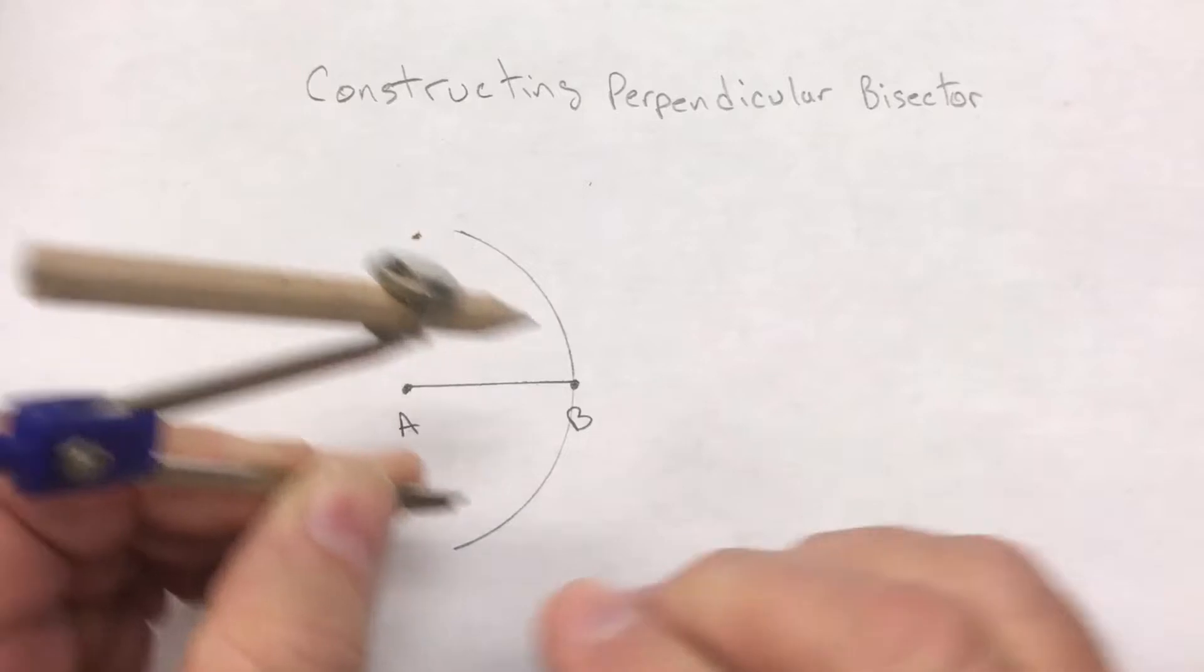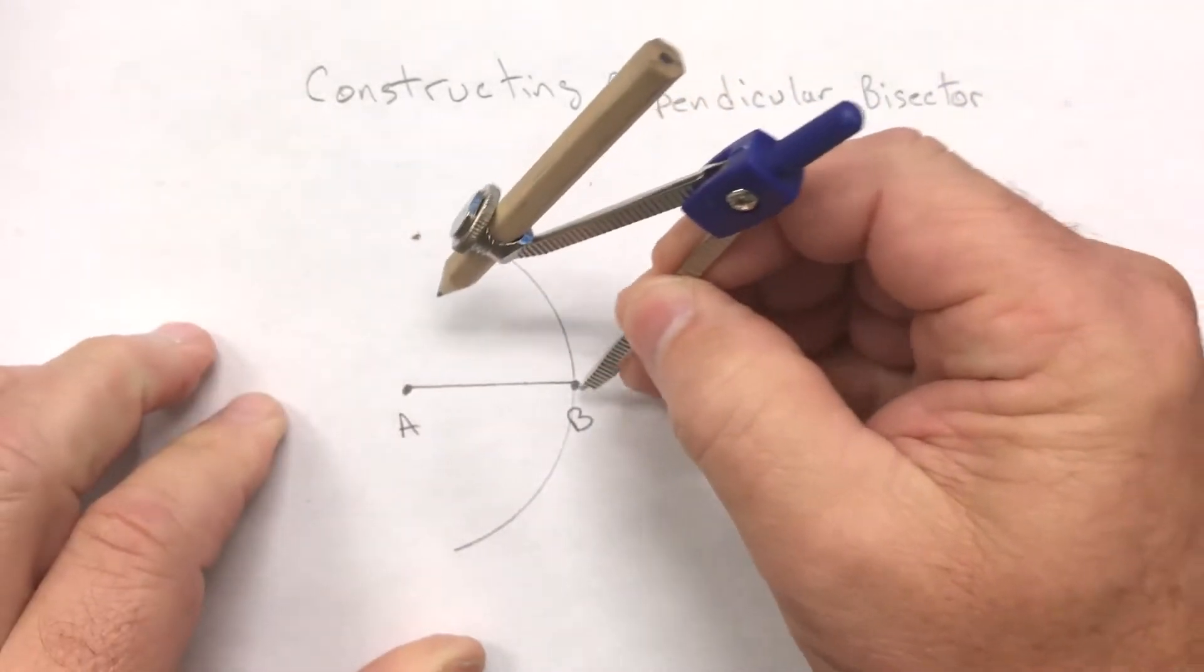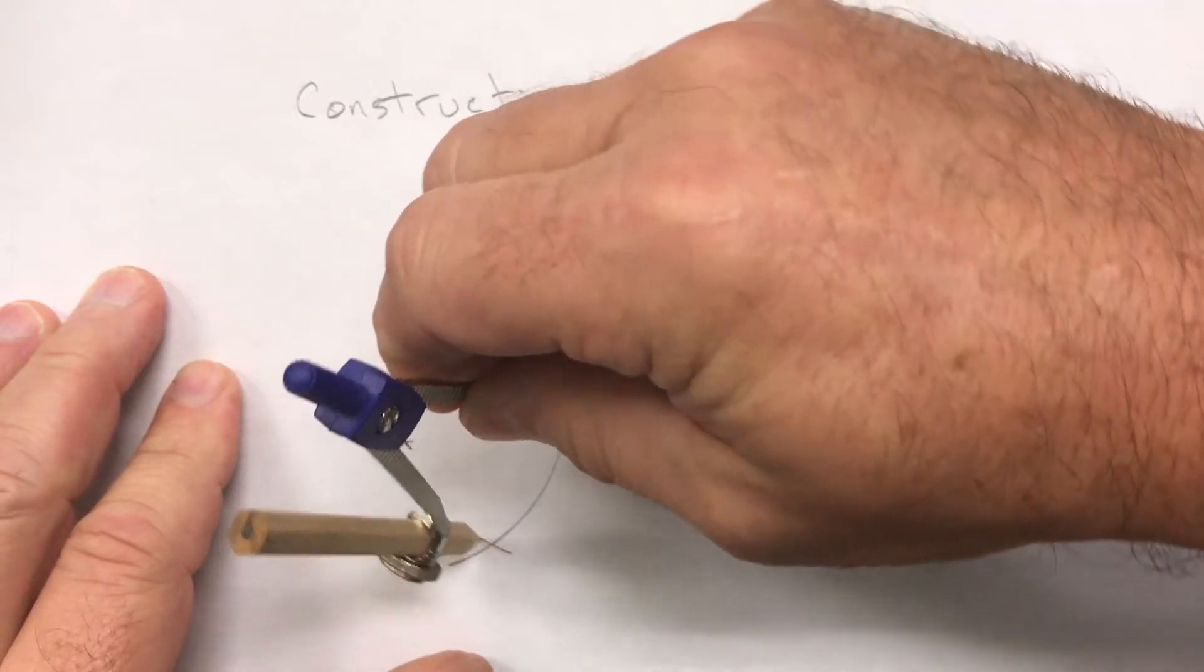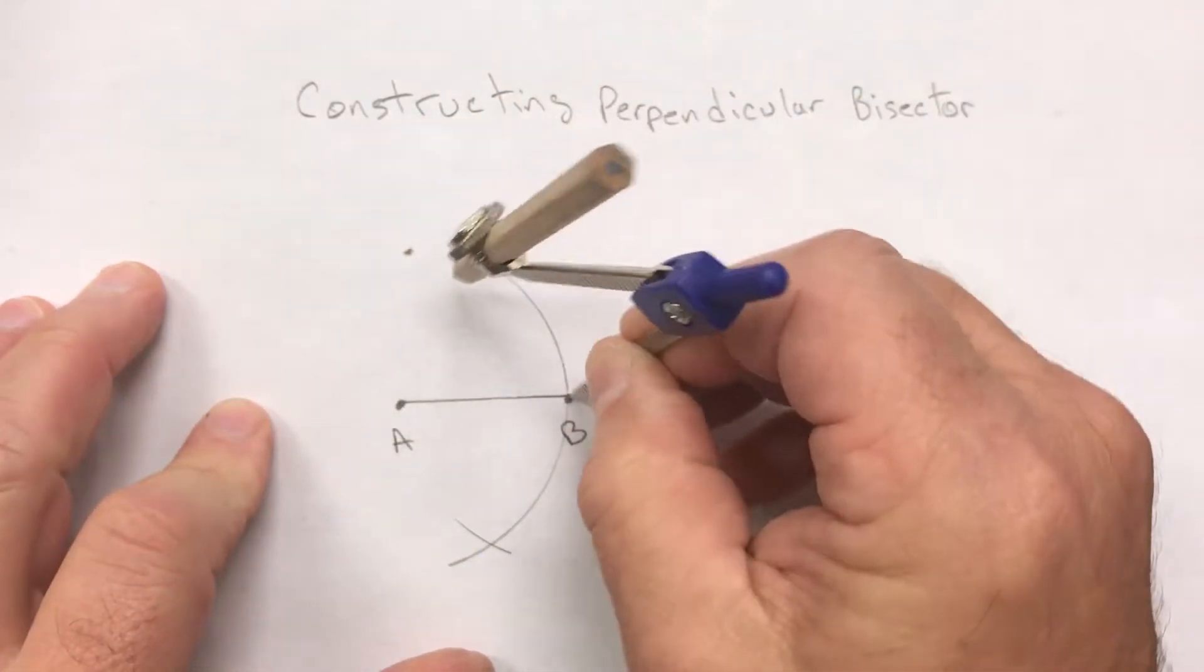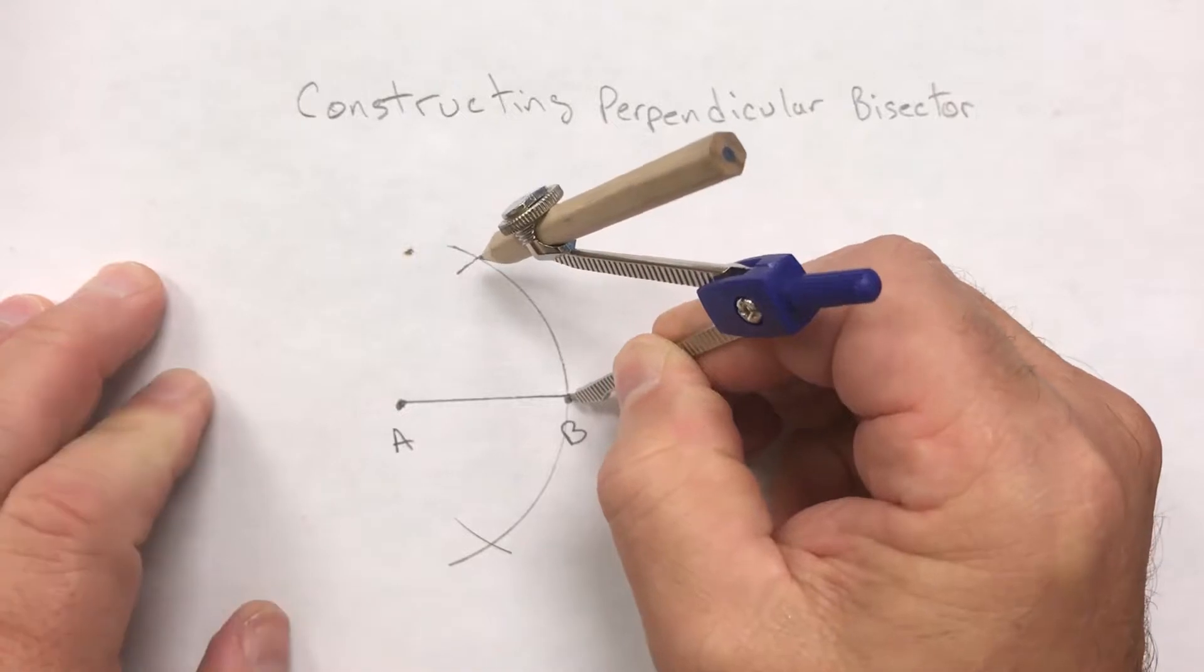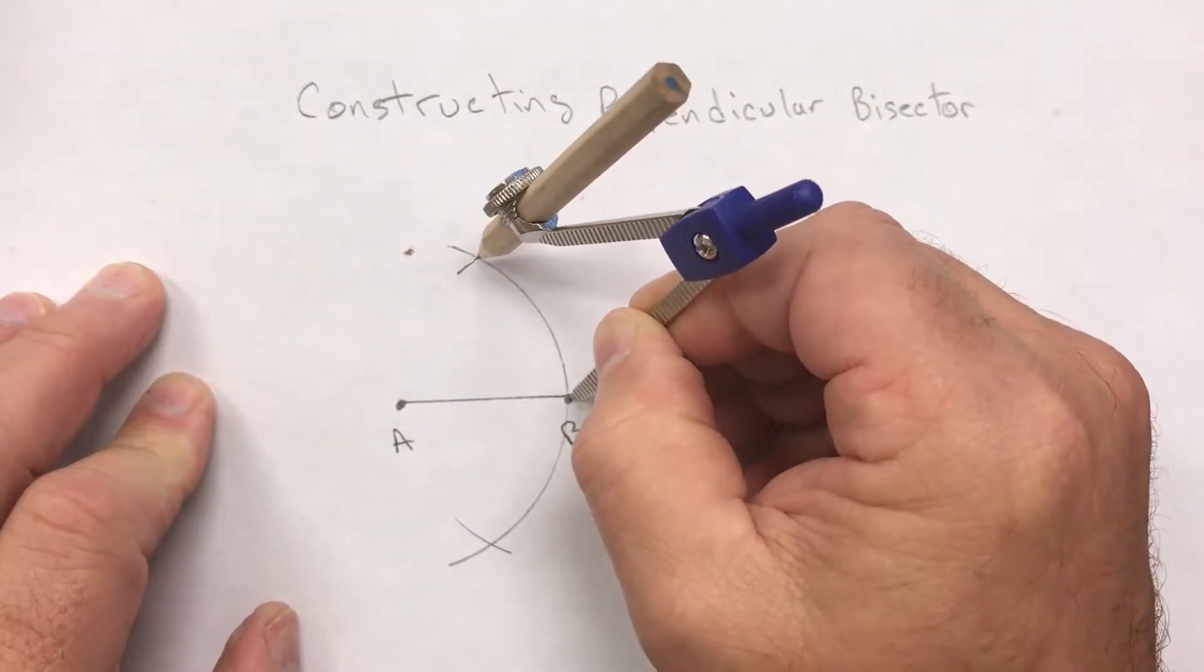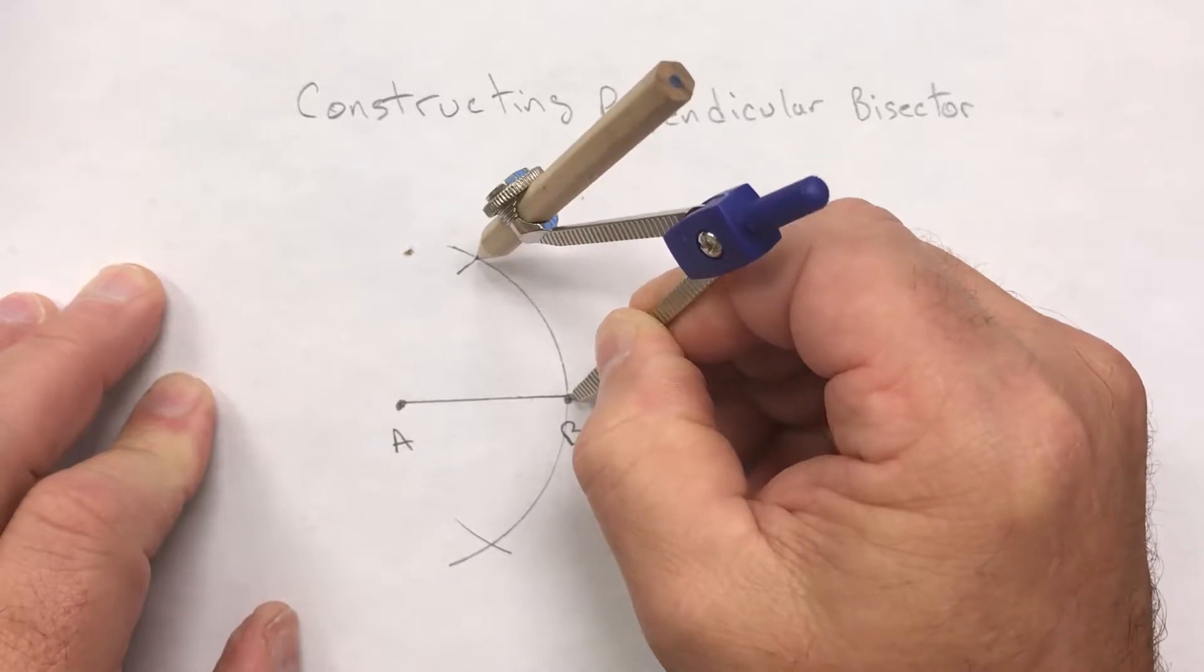Switch your compass point to B and do the same thing, creating an intersection above and below. You don't have to draw it all the way around, just need it to intersect these two arcs.